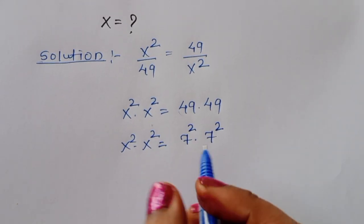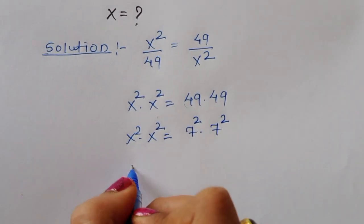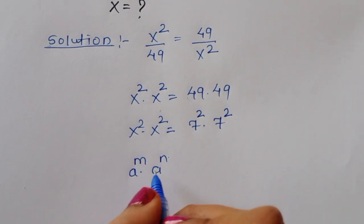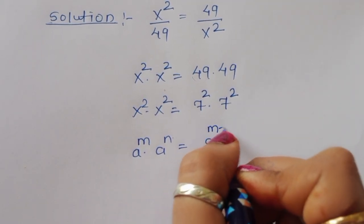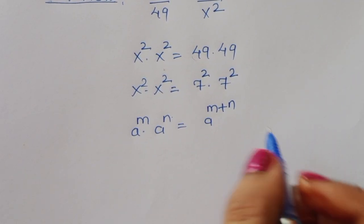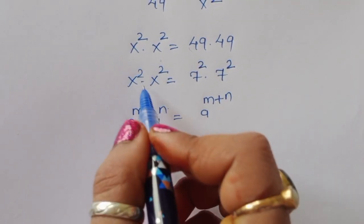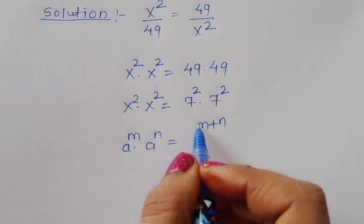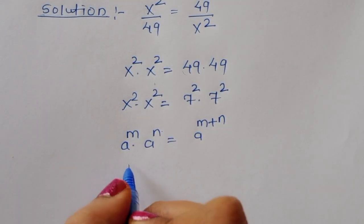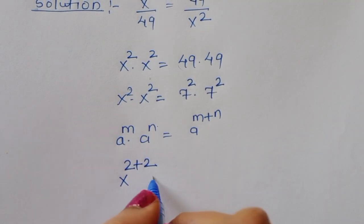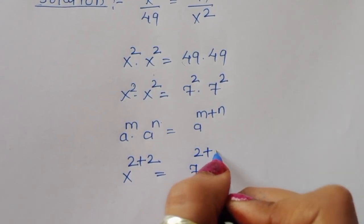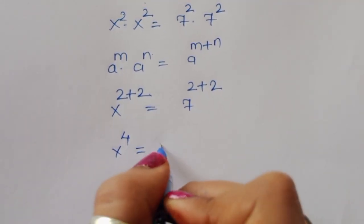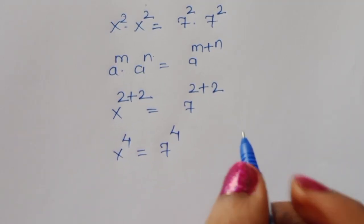We know the formula: if aᵐ times aⁿ is given and the base is the same, we can write it as aᵐ⁺ⁿ. So here x^(2+2) = 7^(2+2), which gives us x⁴ = 7⁴.